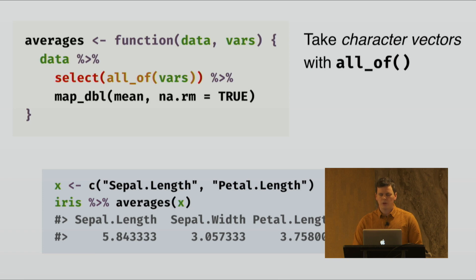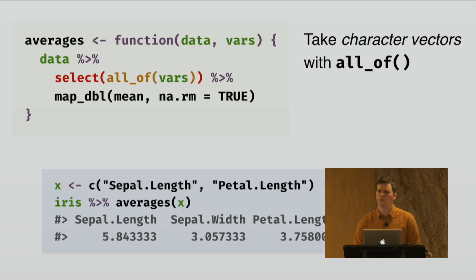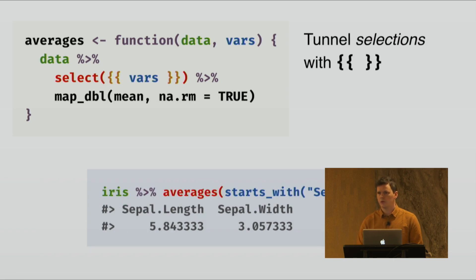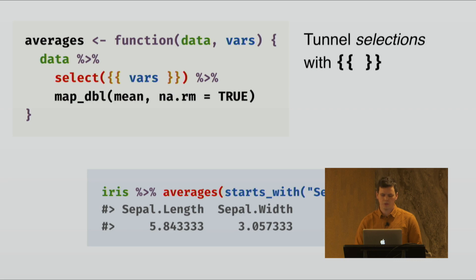If you want to create a function around a selection function, you just take the data frame and the variable containing the column names and you use `select(all_of(...))`. This gives you a normal function and your user can call it with character vectors. But you can also use the double curly operator, and in this case it means that you are tunneling the selections across the function — in the same way that using curly-curly with a data masking verb creates a data masking function, your function becomes a selection function. That means your user can use selection helpers like `starts_with`.